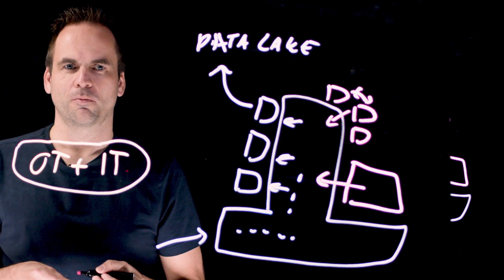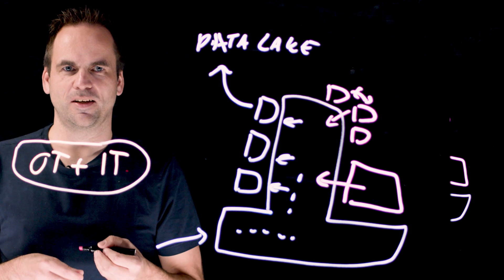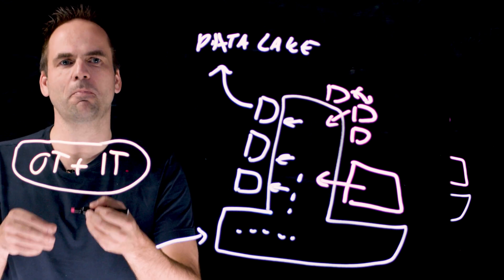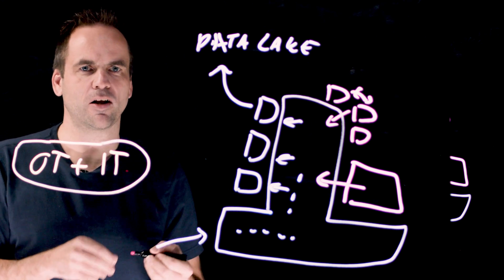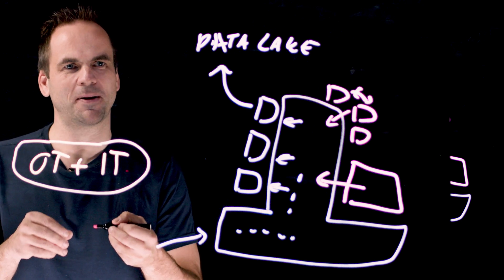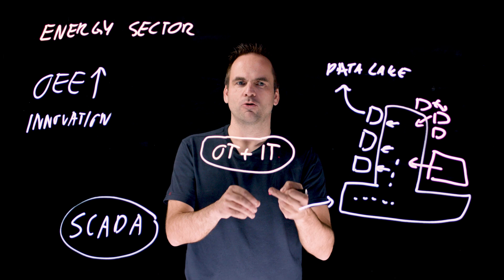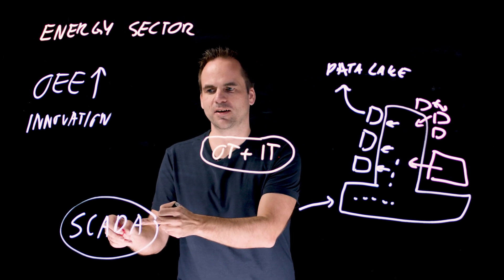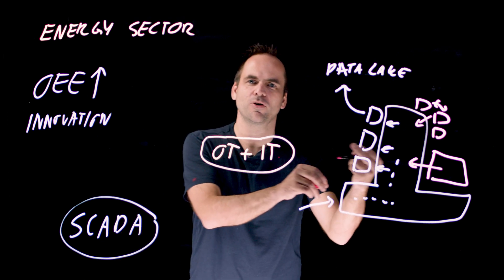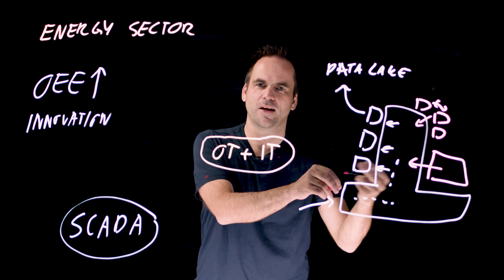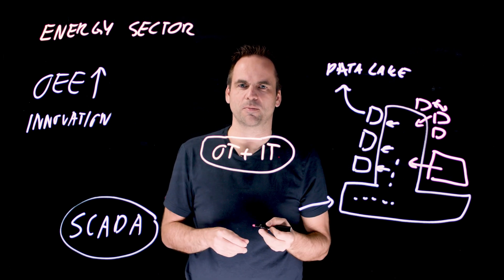And with this now you have more decoupled applications that can continuously run in parallel to the monolith. But then over time you can also shut it down and replace it with new technologies. And this is exactly how you can rebuild an existing monolithic SCADA system with new cloud-native technologies and share the data between each other with data streaming.